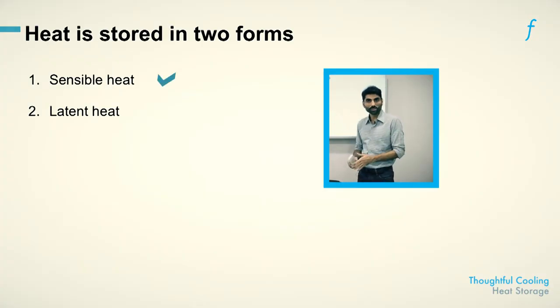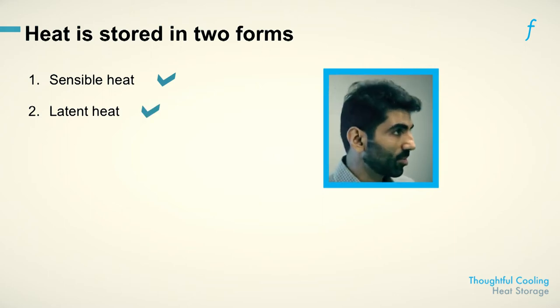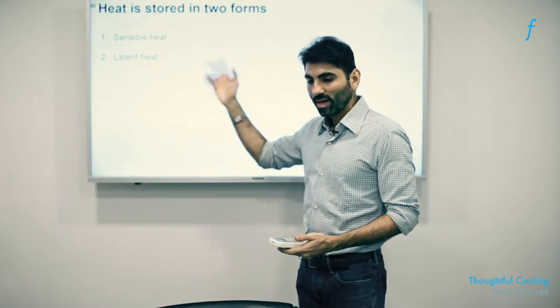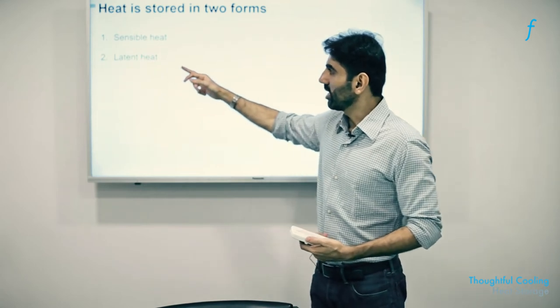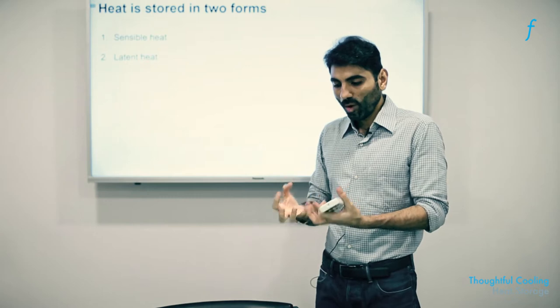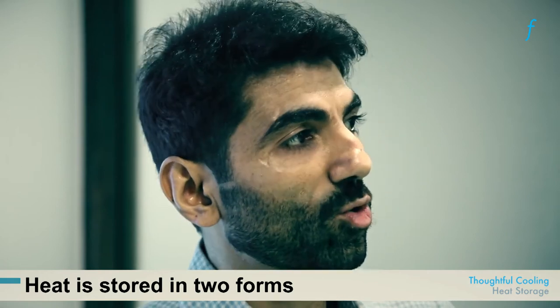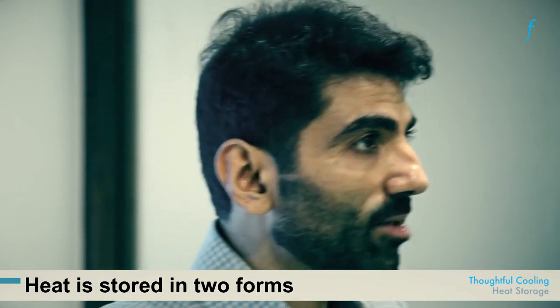Heat is stored in two forms. One is sensible heat, which is the heat that can be sensed by a human being. The second form, which is not directly experienceable, is called latent heat. As we may have learned in high school physics, latent heat is the quantity of heat stored in an object because of its physical state. The amount of latent heat stored in a gas is different from that stored in the same material as a liquid or a solid.